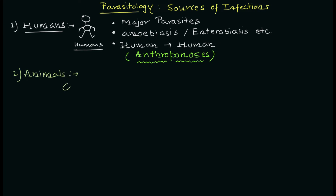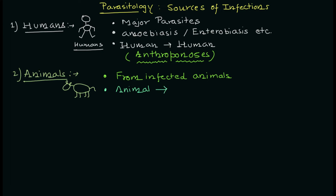The second source is animals. Whenever animals come into the picture, we use the word 'zoo.' This is my diagrammatic representation for the animal. Now, if the infection is coming from animals to humans, we can call it zoonosis or a zoonotic infection.